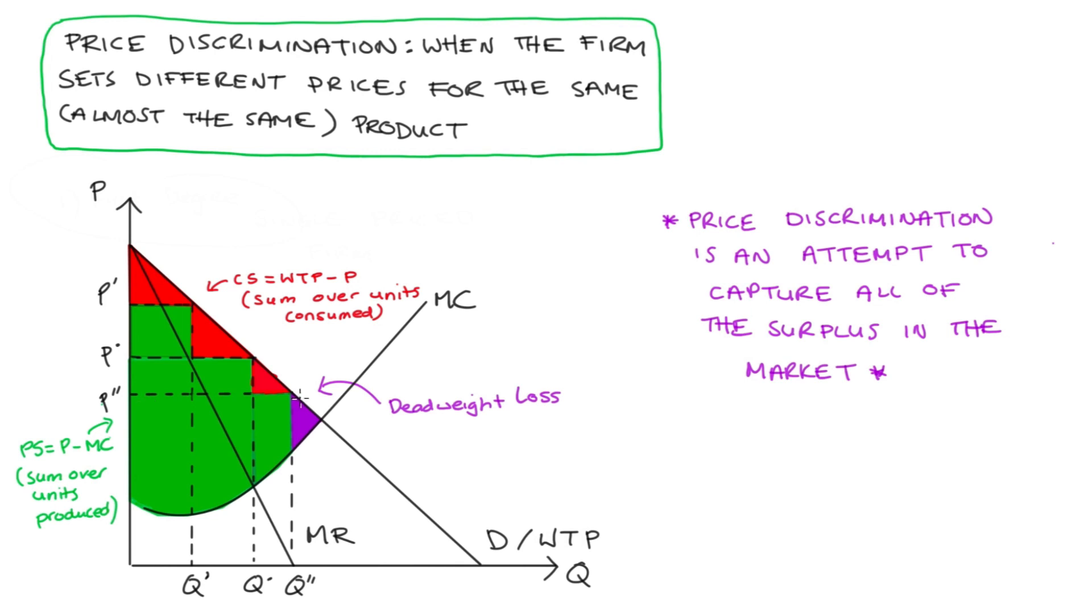Hopefully you can see that as a result of this introduction of this third lower price, we are actually getting some more consumer surplus because some consumers are now engaged in the market and trading when they weren't before. So we take away some dead weight loss, but we also get more producer surplus. In introducing more prices, then the firm is capturing more and more surplus. And it's a really useful way of thinking about price discrimination.